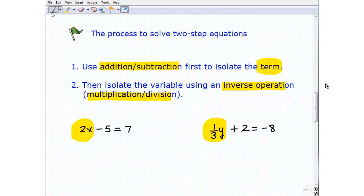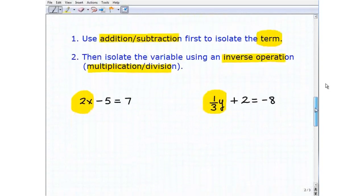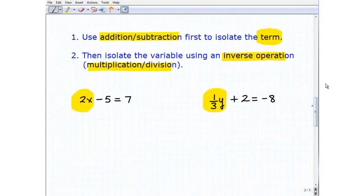So let me go ahead and just actually show it to you. I think this will make much more sense. So the first thing I'm going to do to solve these two-step equations, the first step is I'm going to use addition or subtraction to isolate the term. So our first problem, 2x minus 5 equals 7. I already said 2x is a term. So to isolate it, to get 2x by itself, I'm going to add 5 to both sides of the equation. I'm using that inverse operation concept.